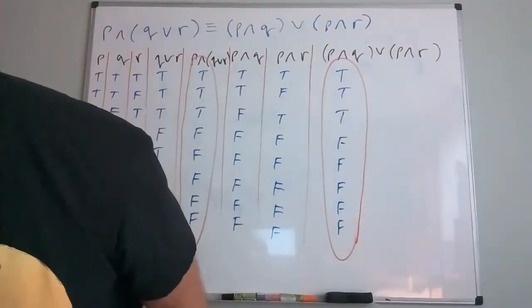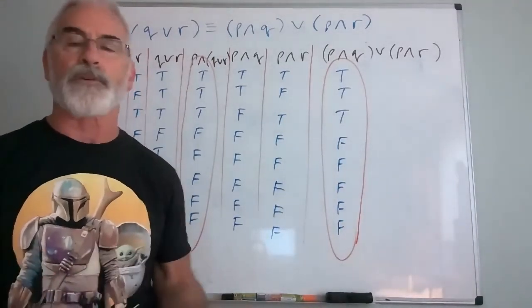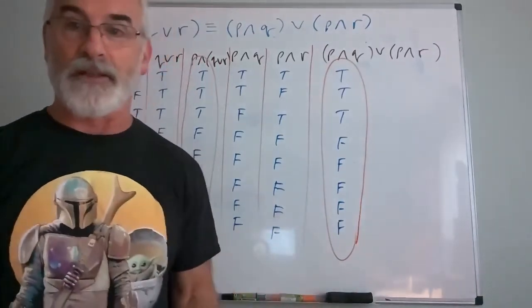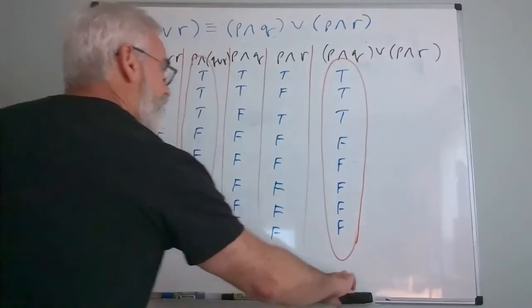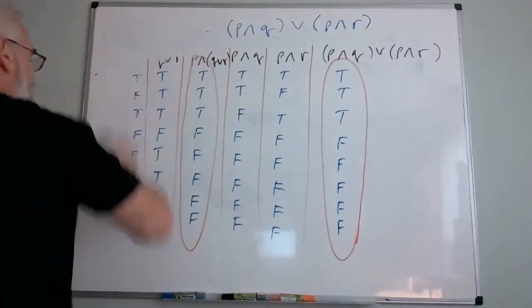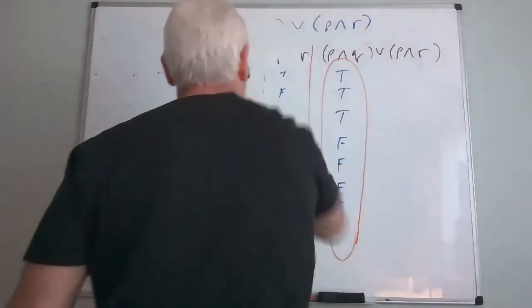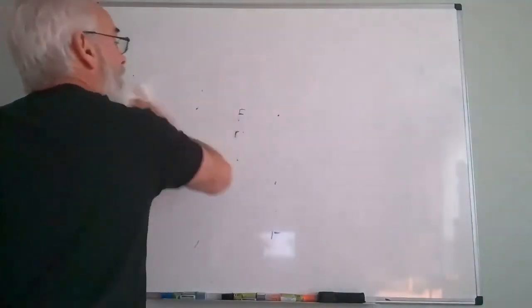The two columns are exactly the same, which means P and (Q or R) is equivalent to (P and Q) or (P and R) — this is the distributive property. If even one T or F differed, this would not be a true statement. You can take complicated expressions and manipulate them — like algebra — to get a different but equivalent statement that's easier to work with. As long as a truth table confirms they're equivalent, you can substitute one for the other. This is called the distributive property.